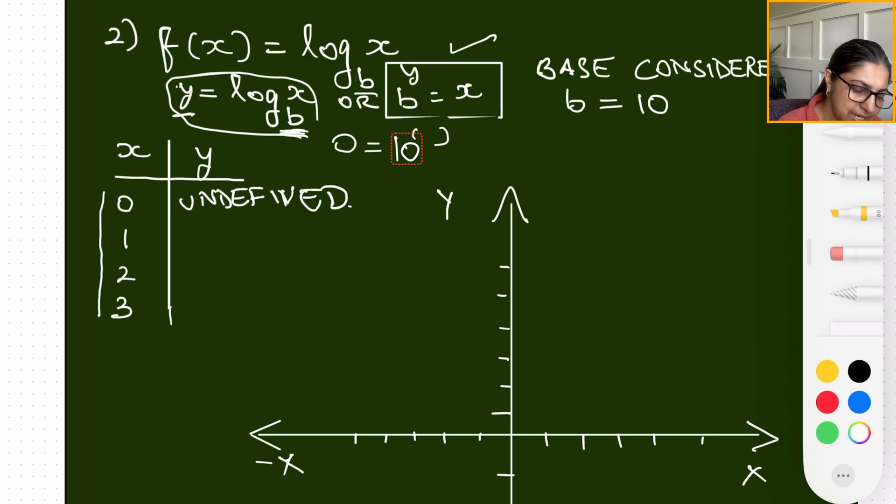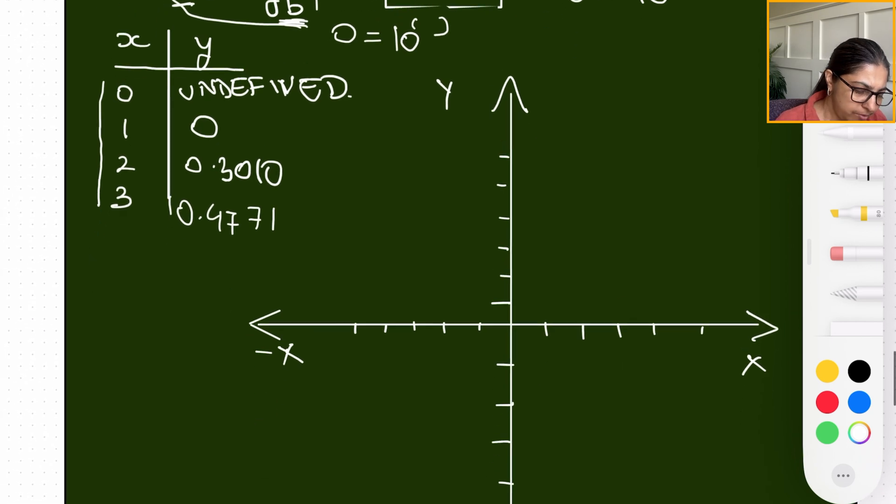So that is basically going to be undefined because there doesn't exist that kind of a number. Hence we have written undefined for zero. For one these are zeros, and for two this is going to be 0.3010. For log of three it is going to be 0.4771. If you would like, you can go ahead and use a calculator, key in these exact values and you will get the same decimal answers.